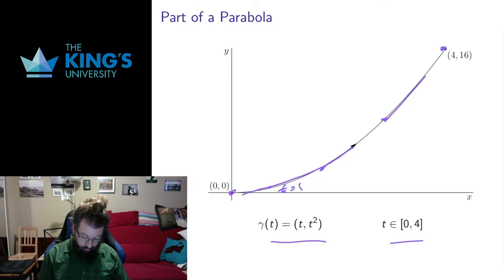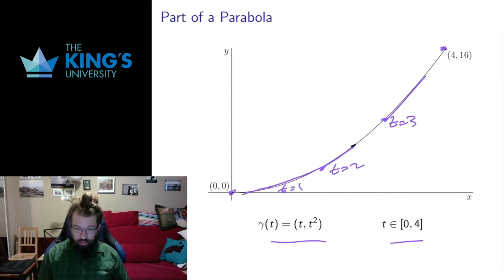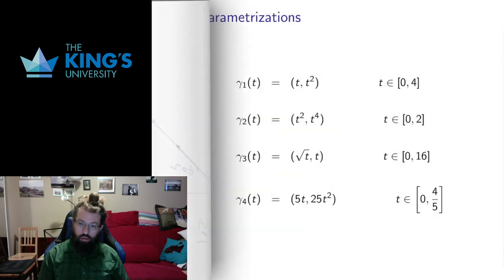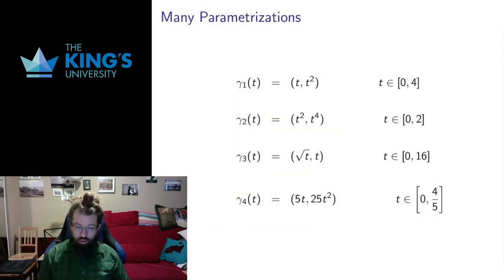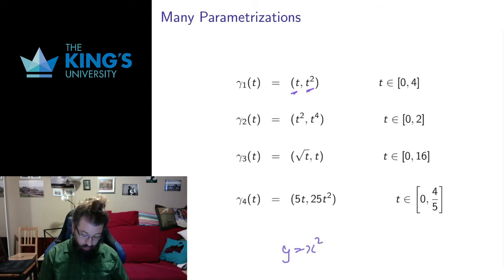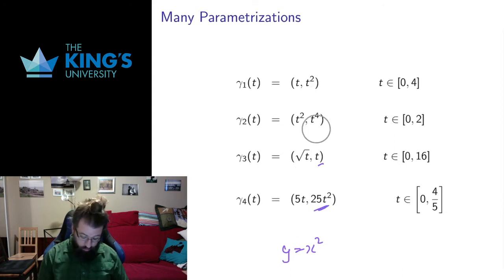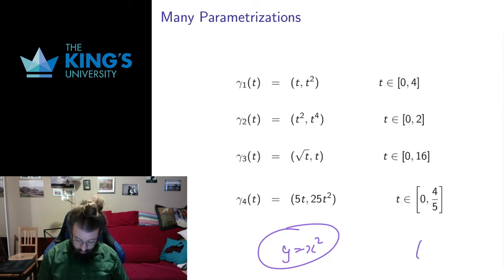So t equals 1, t equals 2, t equals 3 — it looks like it's accelerating as it goes along. The idea of parametrization is that this particular shape, without changing the shape at all, I can change my description of motion along the shape by changing the parametric curve. These four parametrizations all describe that same piece of the parabola. In each case, y equals x squared, so they all describe a piece of the parabola y = x². They all end at the point (4, 16).